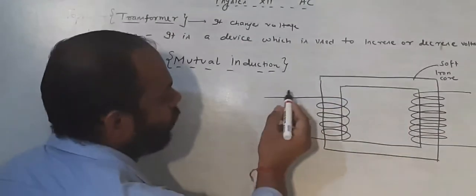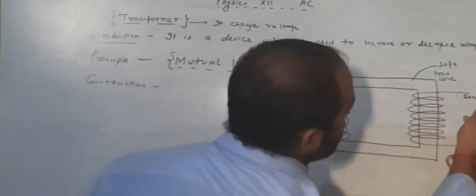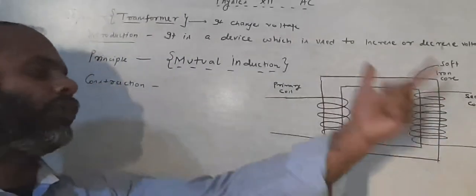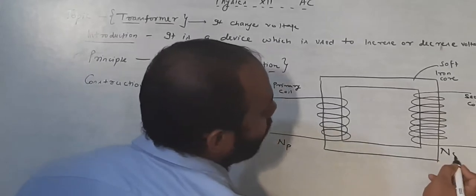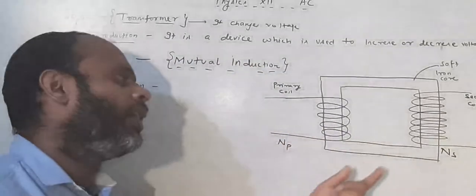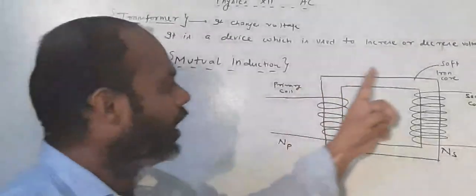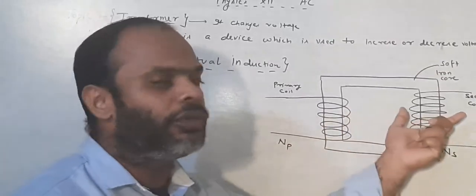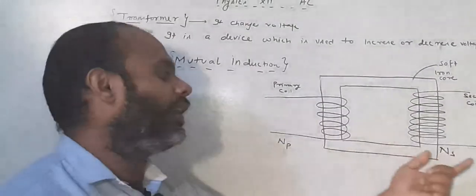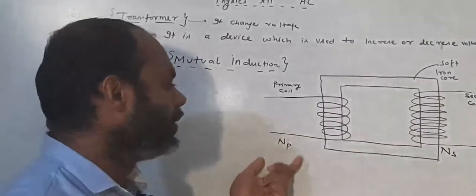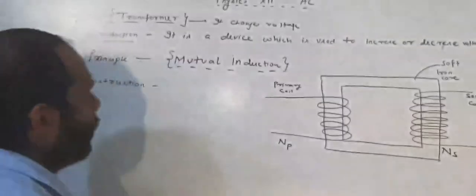This coil on one side is called the primary coil, and the other side is called the secondary coil. The number of turns in the primary is denoted as NP, and in the secondary as NS. NP means number of turns in the primary coil; NS means number of turns in the secondary coil. The number of turns in primary and secondary are different — it may be that the primary has more turns and secondary less, or primary has fewer turns and secondary has more. They are not equal.